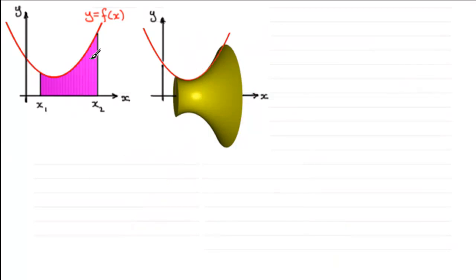Now suppose we have a finite region bounded by the curve y equals f of x, the x-axis and the lines x equals x1 and x equals x2. And if we rotate this region about the x-axis through 360 degrees or the equivalent of two pi radians, then what we generate is this solid of revolution. And if we want to find the volume of this solid of revolution, it can be shown that it's equal to pi times the integral of y squared with respect to x,